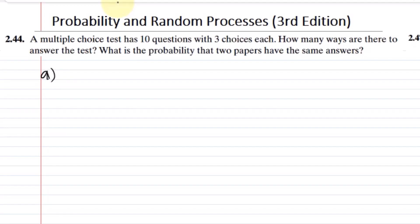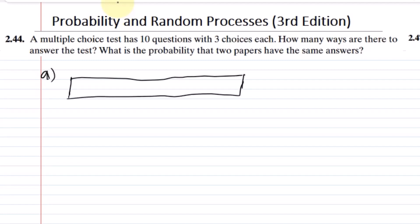If there are 10 questions and each question has 3 choices, let us use the box procedure. We have 10 slots — slot 1, 2, 3, up to 10.